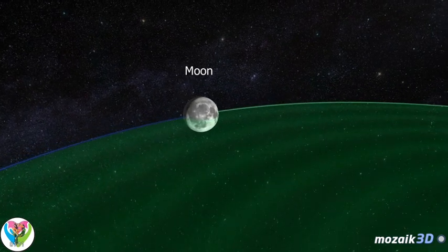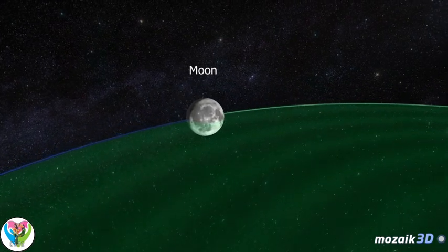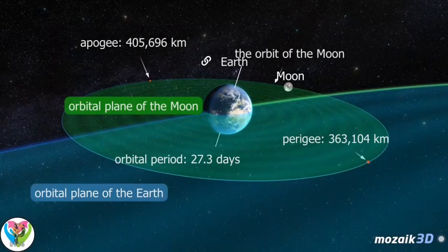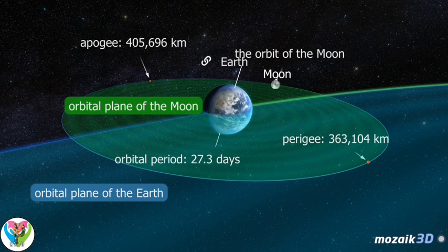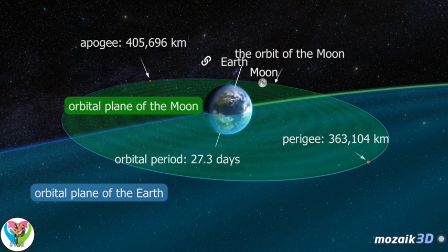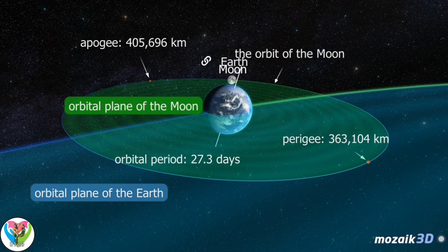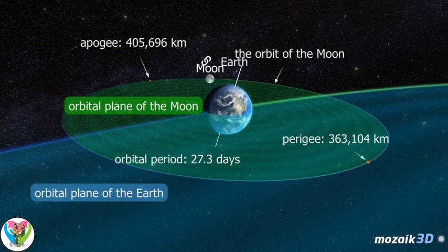At that time, it was about 20 times closer to the Earth than it is today. While orbiting the Sun, the Earth and the Moon orbit their common center of mass, located below the surface of the Earth. The Moon is in synchronous rotation around the Earth — its axial rotation and orbital period are the same. Therefore, we always see the same side.